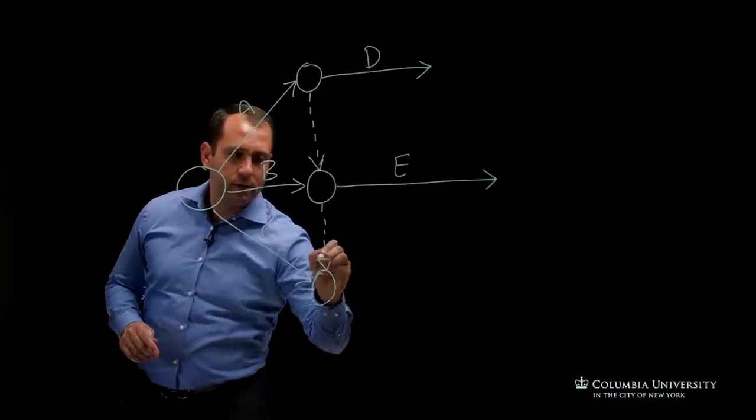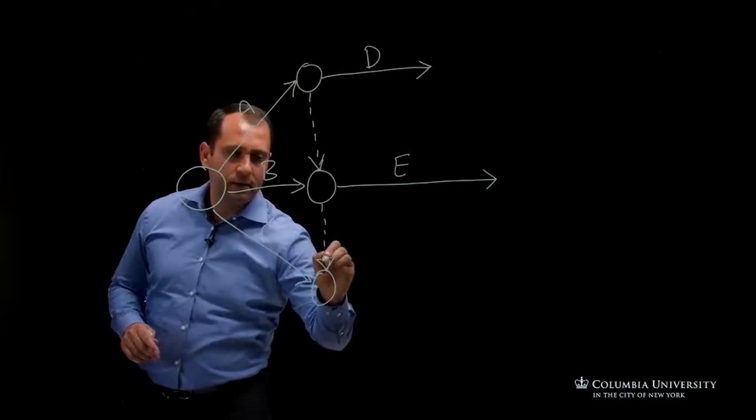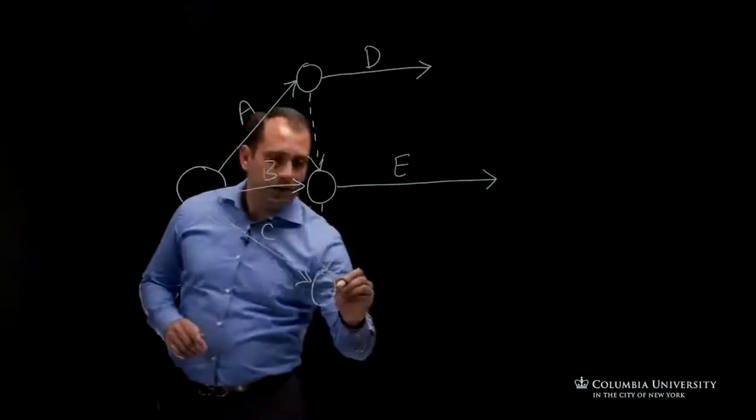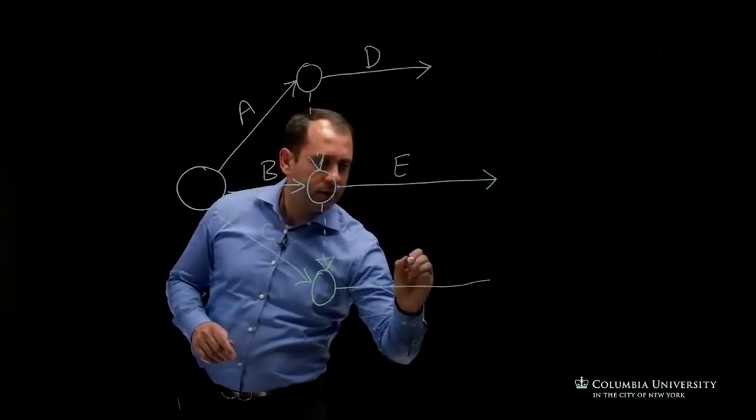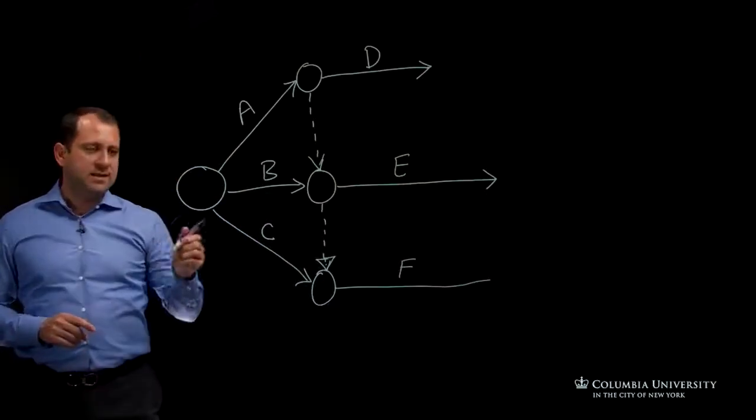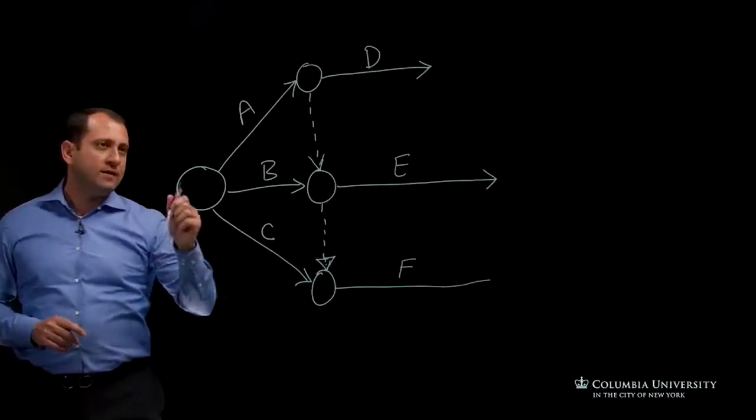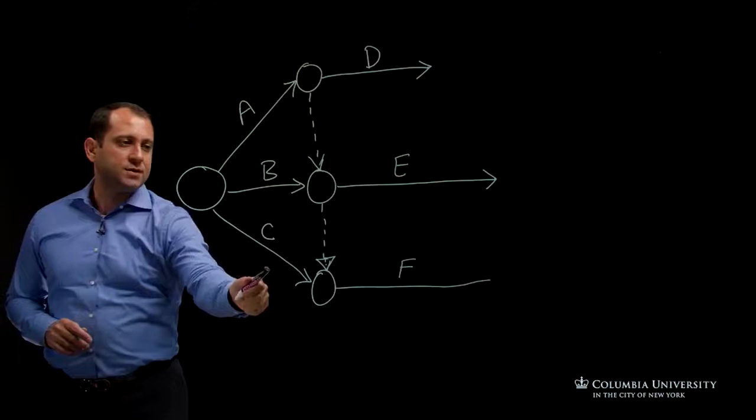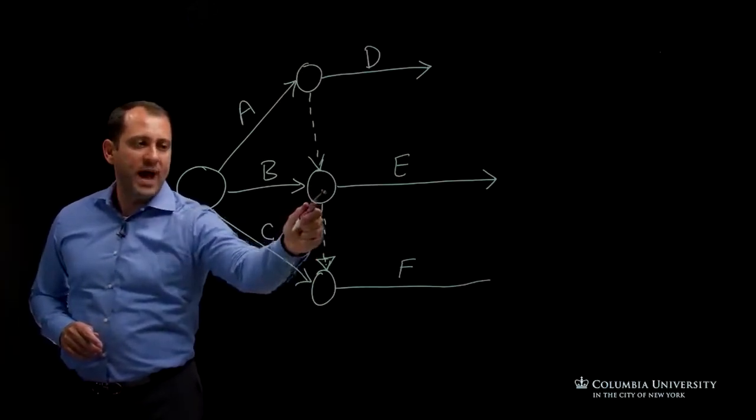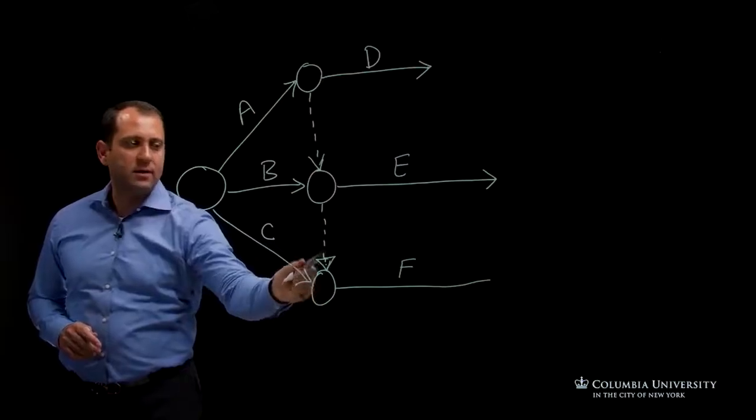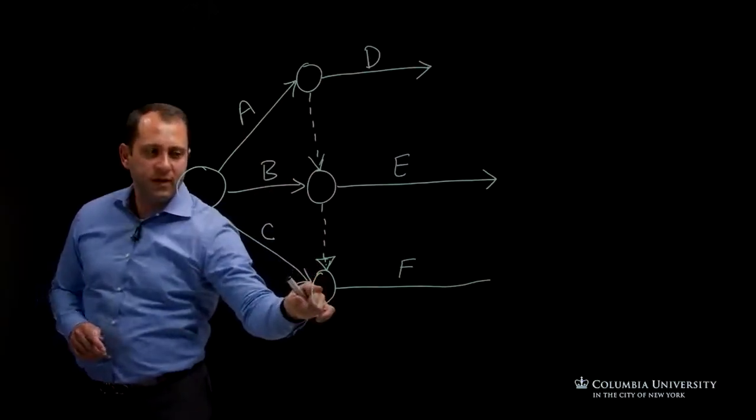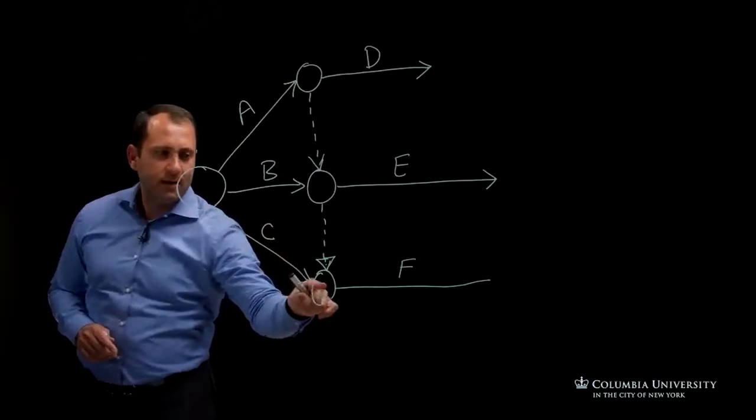So that will be then just having another dummy activity here starting activity F. Then in this case, when activity C finishes, this arrow, the dummy activity, shows when this node happened, it will also happen here. So when A finishes as well as C, F starts.